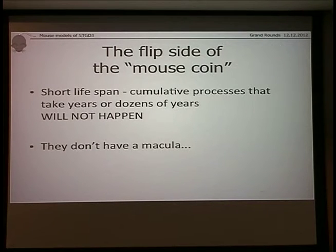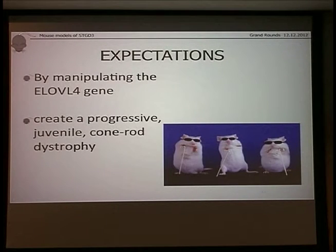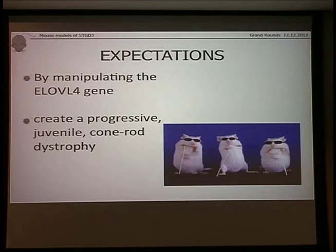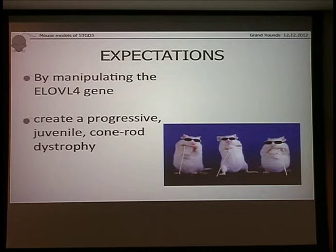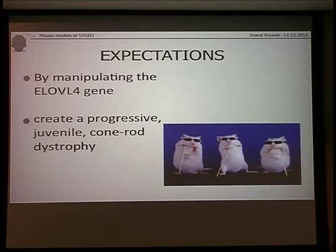What we try to achieve is to say that macular degeneration is a cone-rod degeneration. We want a mouse that shows a progressive cone-rod dystrophy with early onset, achieved by manipulating the ELOVL4 gene. By the end of my talk you will find out that we do not yet have such a model, although I'm going to speak about the attempts.